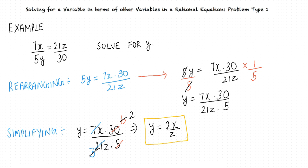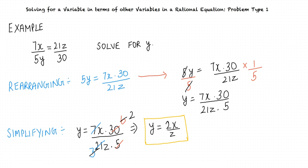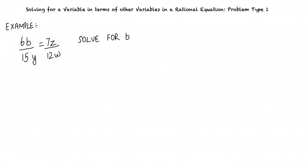We have solved for y. Let us consider another example. We have the following equation: 6b divided by 15y equals 7z divided by 12w, and we are required to solve for b.